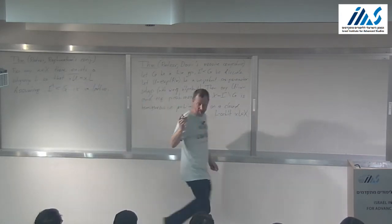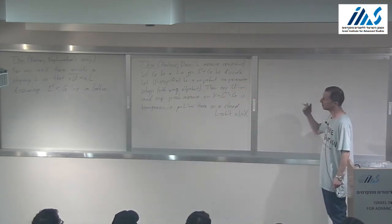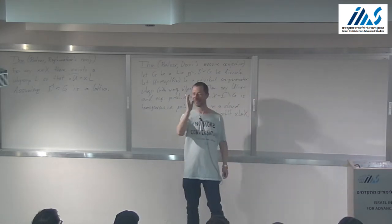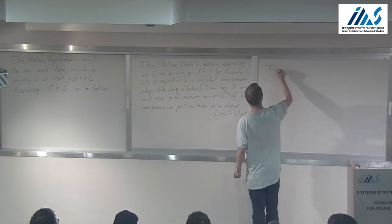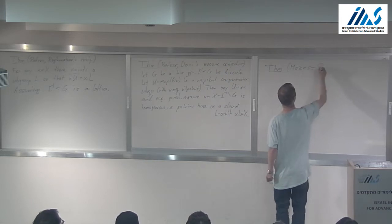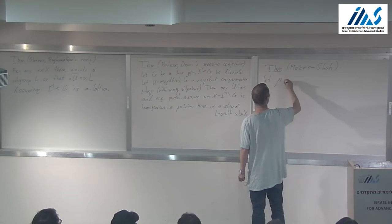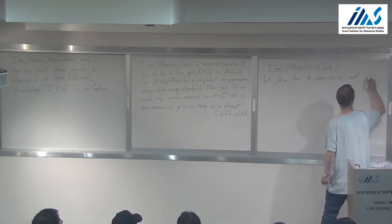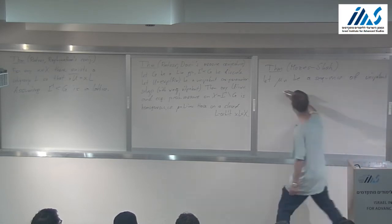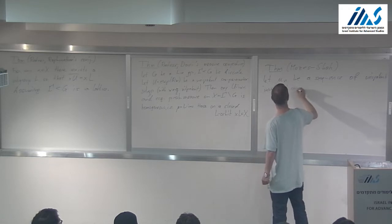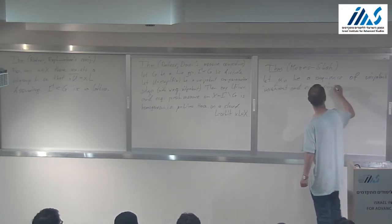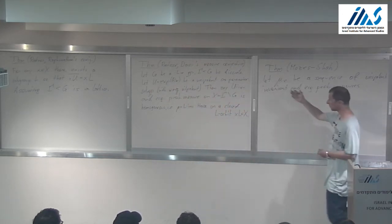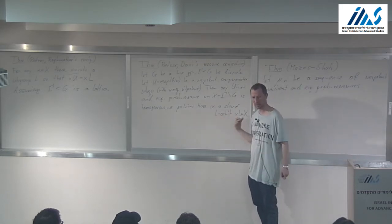Another theorem that fits very well with what I want to say later is an amazing theorem of Shah and Nimish. The theorem: let mu_n be a sequence of unipotent invariant and ergodic probability measures — by which I mean for each one there is a one-parameter subgroup such that the measure is, by Ratner's theorem itself, an algebraic measure sitting on a closed orbit. The L's and U's could be different along the sequence.